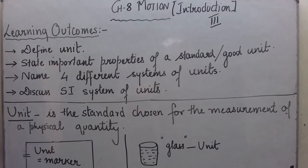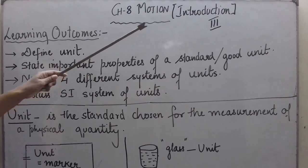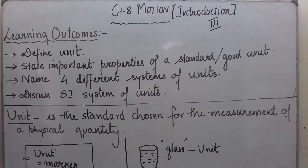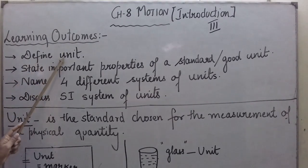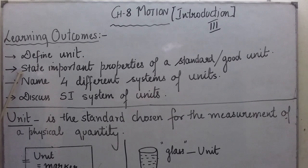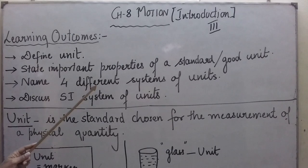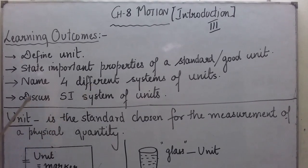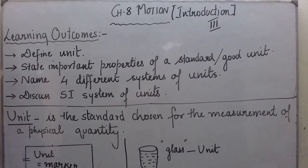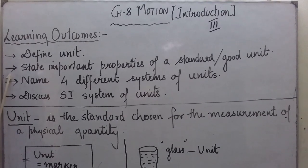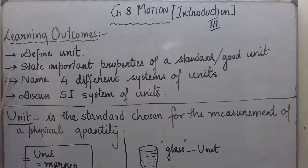Hello students. In this video we are going to continue with the introduction part of chapter 8, Motion of Physics class. The learning outcomes of this video are: define unit, state important properties of a standard or a good unit, name four different systems of units which are commonly used, and discuss the SI system of units. The introduction part of this chapter is very important because although these topics are not given in the NCERT textbook, without learning them you cannot understand the chapter properly.